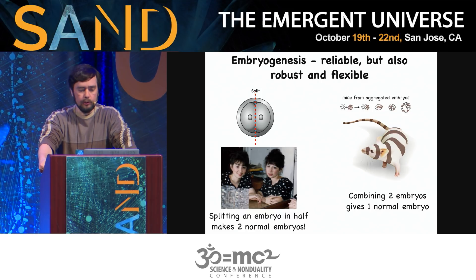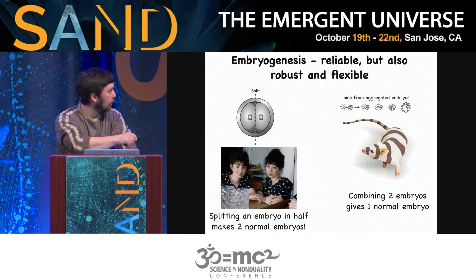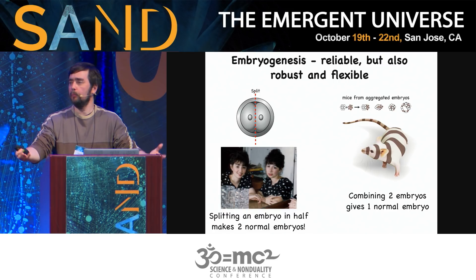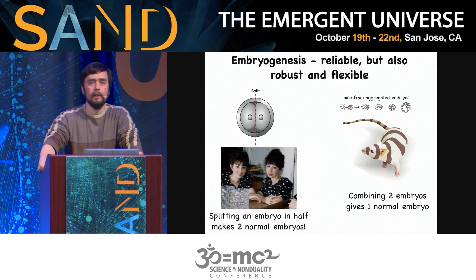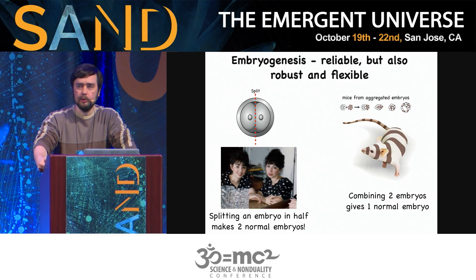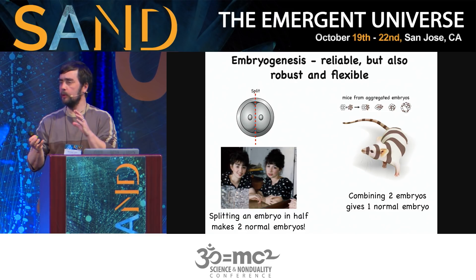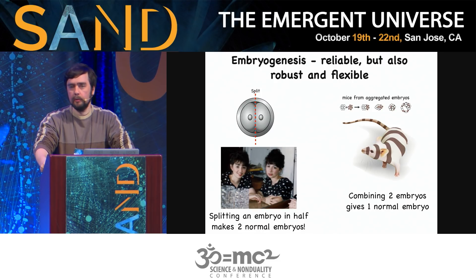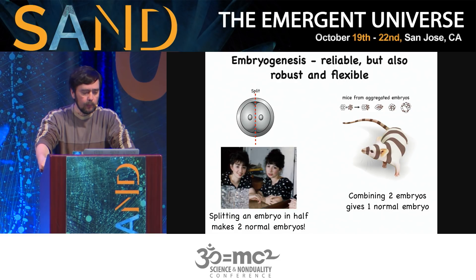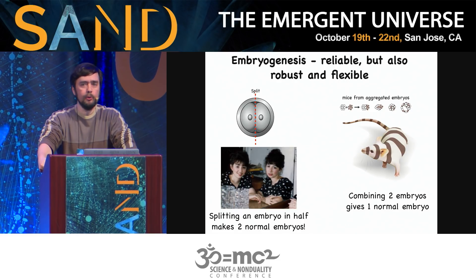Embryogenesis is reliable, but it's also robust and flexible. If I take an early mammalian embryo and cut it in half, I don't get two half-embryos — which is what you'd get if you cut any human technology in half. You will in fact get two perfectly normal monozygotic twins. You can also do the opposite: take two early mouse embryos, smush them together like a snowball, and out comes a perfectly normal mouse — slightly bigger, but perfectly normal.